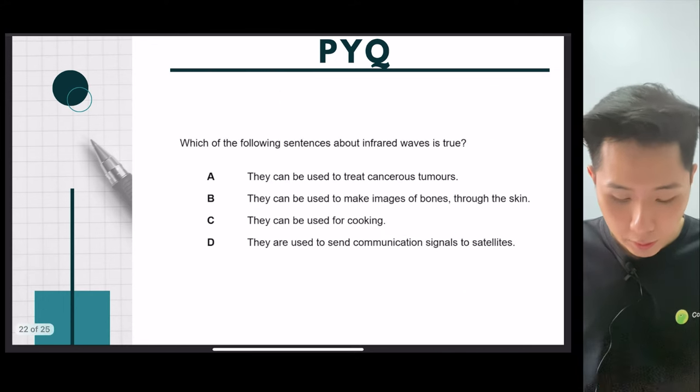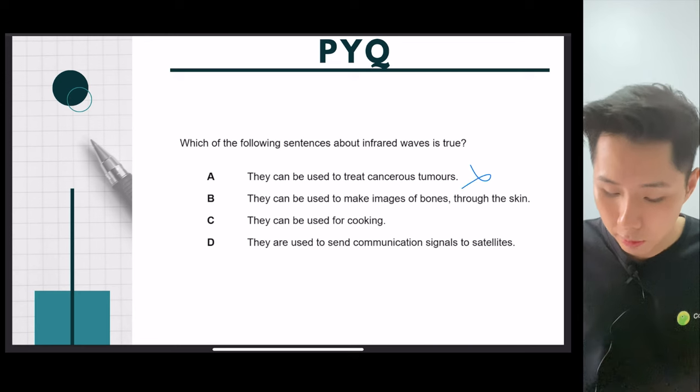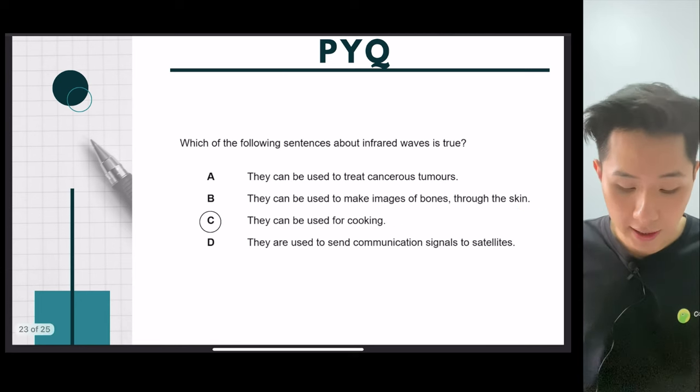So let's look into the next question. Which sentence about infrared is correct? They are used to treat cancerous tumor, which is incorrect. They can be used to make imaging. So these are for gamma ray. This is X-ray instead. They are used for cooking. Might be true. They are used to send communication signal, which might not be true. That should be microwave. So the answer is C.